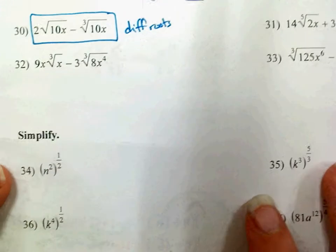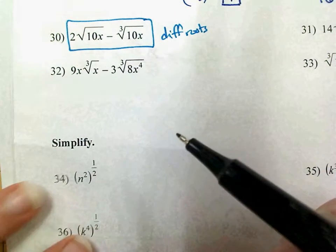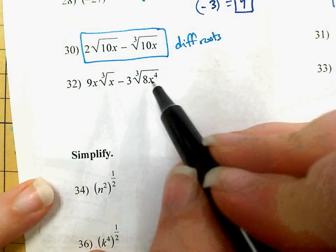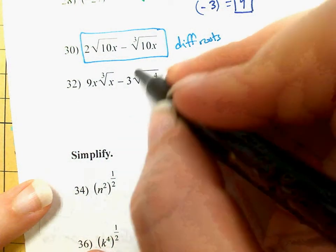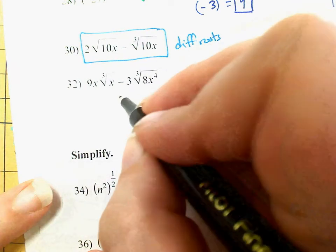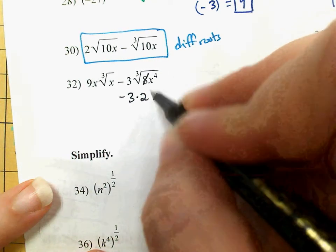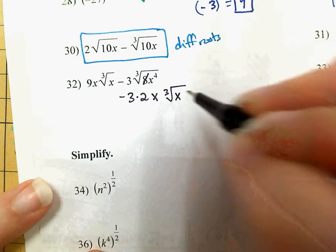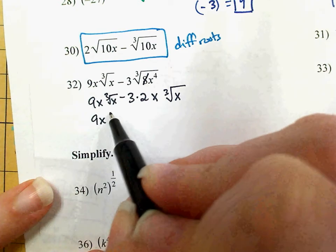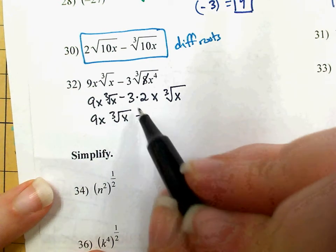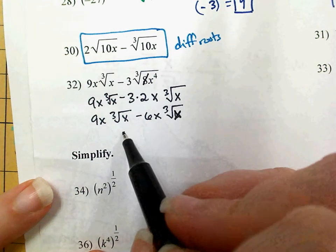On 32, I've got 9x times the cubed root of x, and 3 times the cubed root of 8x to the 4th. I've got the cubed root on both. 8x to the 4th looks like I can't simplify, but I can simplify this cubed root. The cubed root of 8 is 2, and the cubed root of x to the 4th means I've got an x on the exterior — 3 goes into 4 one time with 1 left over. So I've actually got 9x times the cubed root of x minus 6x times the cubed root of x, which is 3x times the cubed root of x.